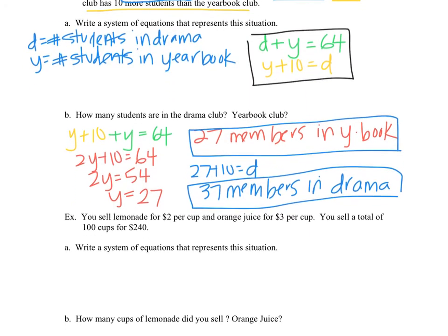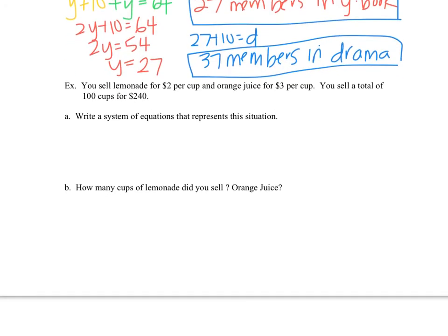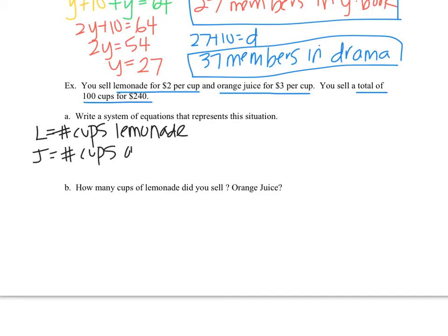All right, we're going to look at one more example. You sell lemonade for $2 per cup and orange juice for $3 per cup. You sell a total of 100 cups for $240. So the first thing that we want to do, step one, was to define our variables. So I'll say that lemonade is L. So that's going to be the number of cups of lemonade. And I'll make J be the number of cups of orange juice.